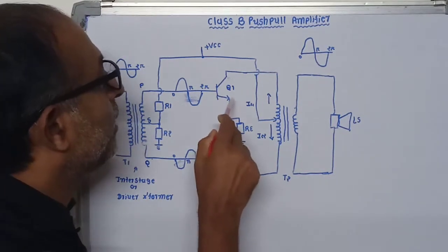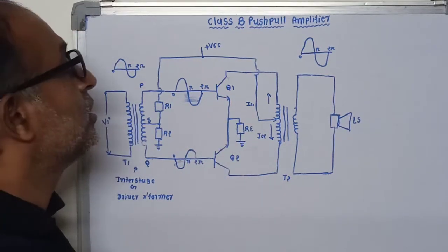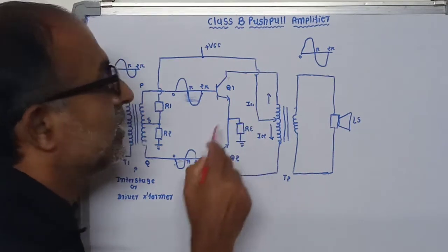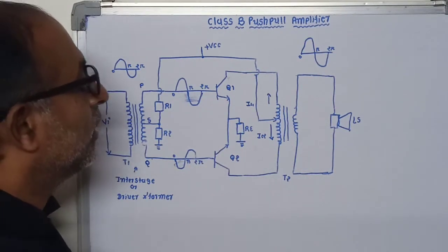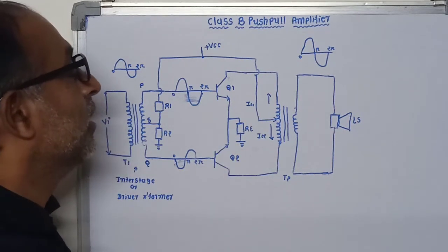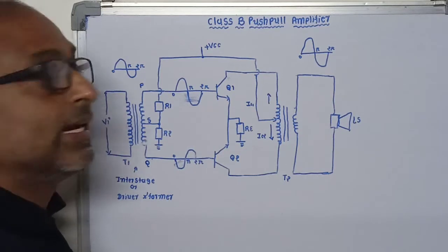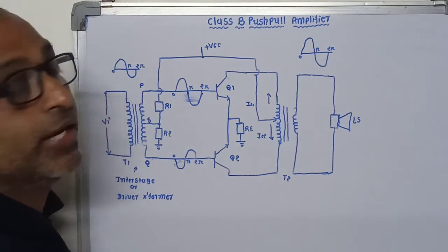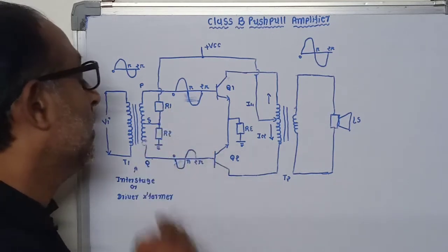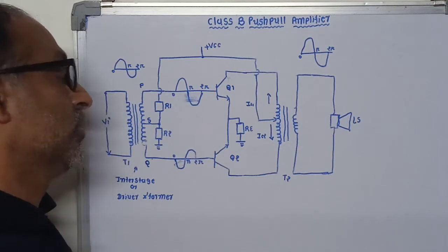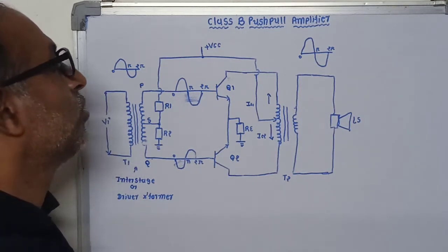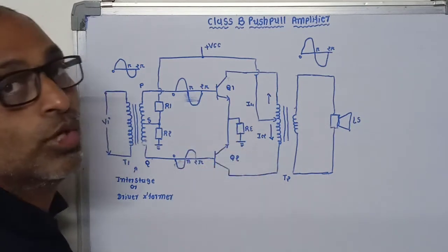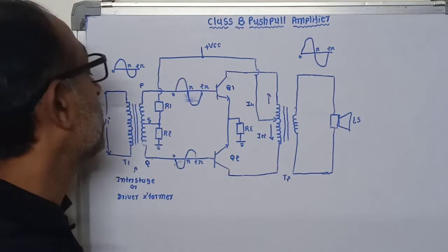The emitter terminals of both power transistors Q1 and Q2 are joined to each other and grounded through emitter resistance RE. The emitter capacitor CE is not connected in parallel with the emitter resistance RE, meaning negative feedback is used, which reduces distortion but also reduces the gain of the amplifier. Resistance R1 and R2 is the voltage divider type resistance which provides bias to the transistors. The bias is selected such that both Q1 and Q2 are operated in the cutoff region.